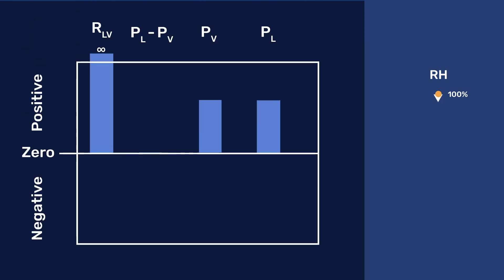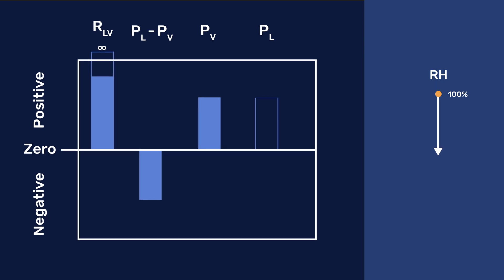When RH is 100%, the liquid-vapor interface is flat, so RLV is infinite and PL equals PV. As humidity decreases, RLV decreases and so does PL. As a result, PL minus PV becomes increasingly negative while PV remains constant.